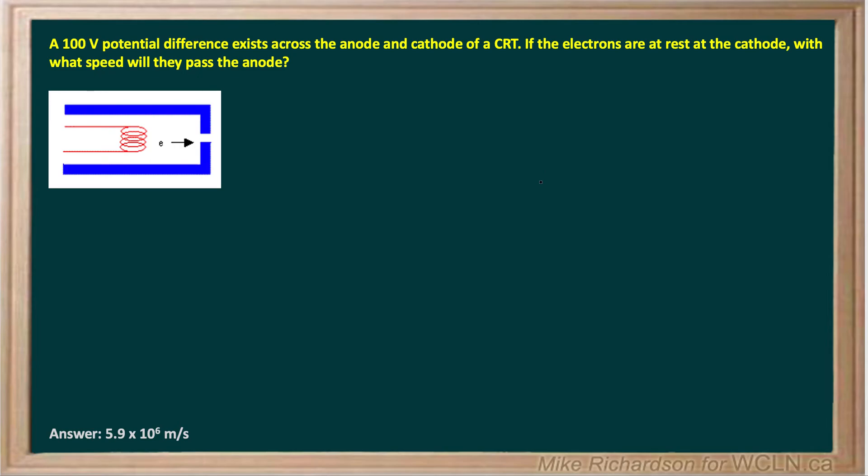A 100 V potential difference exists across the anode and cathode of a CRT, a cathode ray tube. If the electrons are considered to be at rest at the cathode, what speed will they pass through the anode?